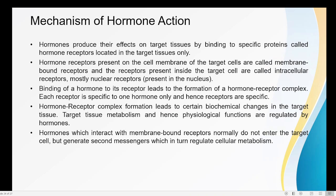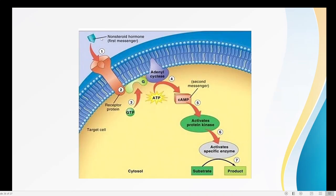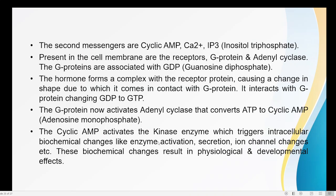The hormone interacts with the membrane-bound receptors but does not enter into the target cell; instead it creates a second messenger that controls the metabolism. The second messenger can be cyclic AMP, calcium ions, or inositol phosphate — these three are the different types of second messengers which produce their effect on cellular metabolism.